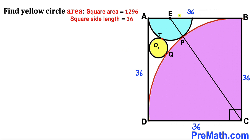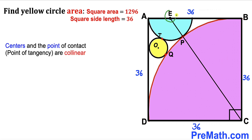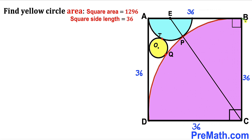Here's our next step. I have connected point E with point C, where E is the center of the blue semicircle and C is the center of the purple quarter circle. Recalling this crucial fact: the centers and the point of tangency are collinear. So all three points E, P, and C lie on the very same line. We can see that BC is the radius of the purple quarter circle, which is 36.